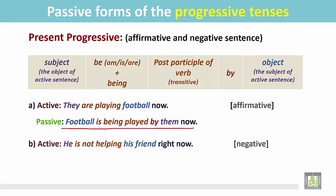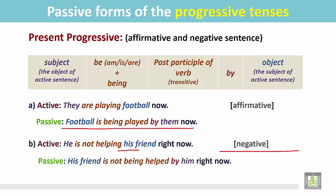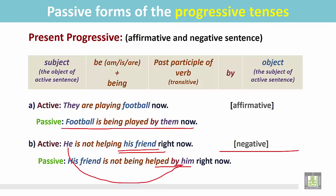Another example. 'He is not helping his friend right now.' This is a statement in the negative form. The passive form: the object of the active sentence becomes the subject. The subject is singular so we use 'is'. To make it negative, put 'not'. For the progressive tense, add 'being', then the past participle 'helped'. Then the preposition and the subject become the object. His friend is not being helped by him right now.